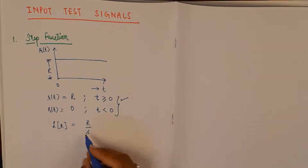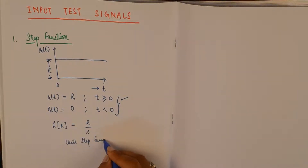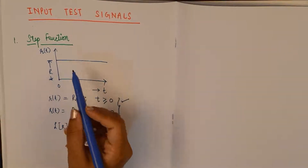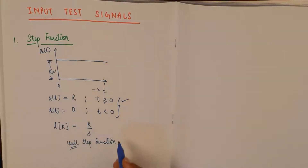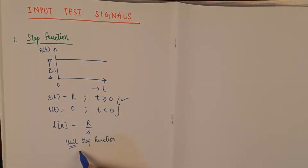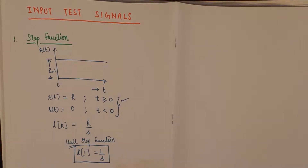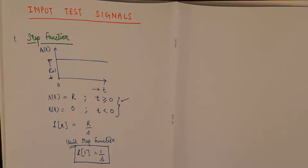Most of the time we make use of the unit step function. Unit implies 1, so if the magnitude R equals 1, the expression becomes even simpler. The Laplace transform of 1 is 1/s. If you're not comfortable with standard Laplace transform pairs, you can refer to my earlier tutorial. So this is the first test input signal — the step function.